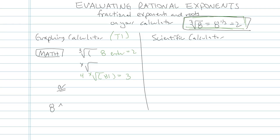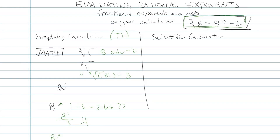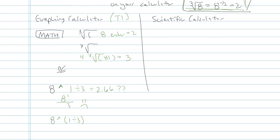Let's say you wanted to do it in exponent form. 8 to the 1/3 power can be done in a couple different ways. One thing you want to look for is this little caret button — it's on the far right side, above the division sign. A lot of students will type 8, caret, 1 divided by 3, and they get 2.66. That's not right. What happened is your calculator did order of operations — it did the exponent first, then divide by 3. What we wanted was 8 to the 1/3 power. So you need to type in 8, then the caret, then parentheses 1 divided by 3, and that'll give you the answer 2.